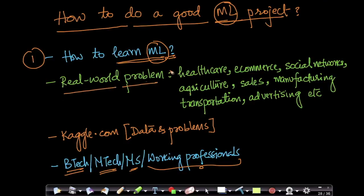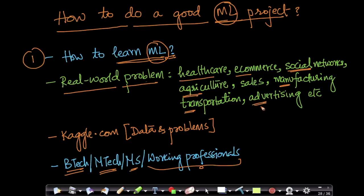Machine learning is used in many areas — healthcare, e-commerce, social networks like Facebook, agriculture, manufacturing, and transportation. For example, it's used by Uber to decide how many cabs to place at a given location, and it's also used in advertising — for example, the ads Google shows you online are largely driven by machine learning and AI.